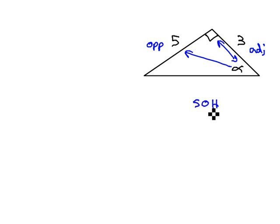And so, if we think about our SOH CAH TOA, the only ratio that uses both opposite and adjacent is the tangent. So, we will take the tangent of our angle alpha, which is equal to opposite over adjacent, 5 over 3.